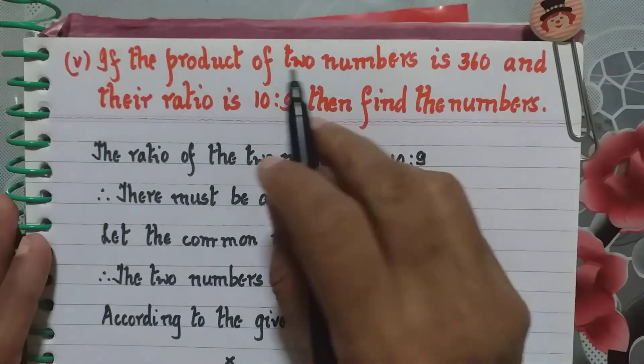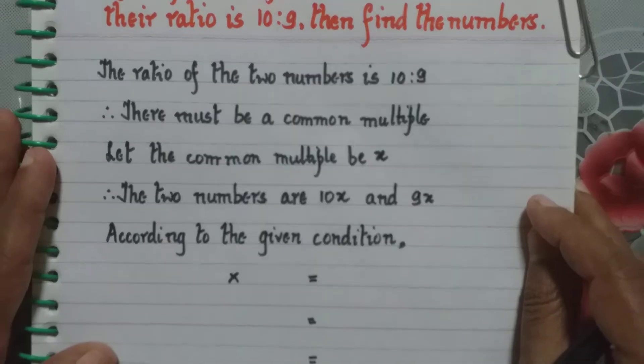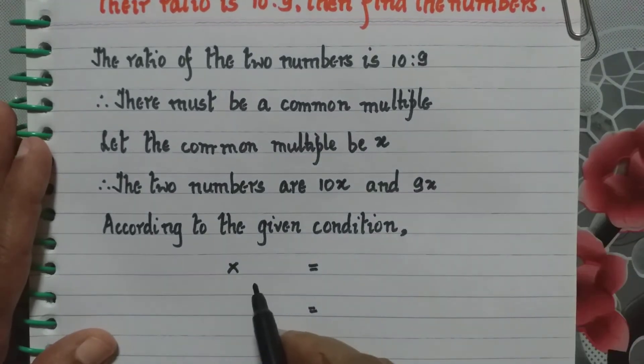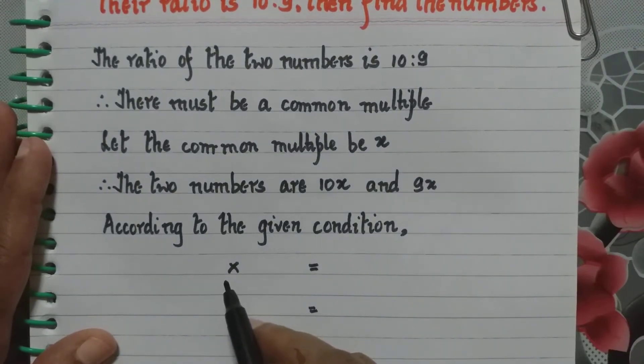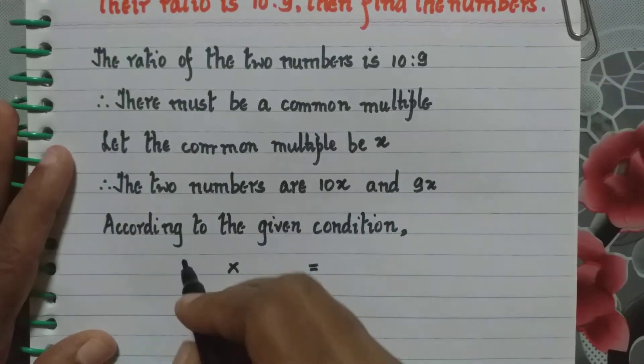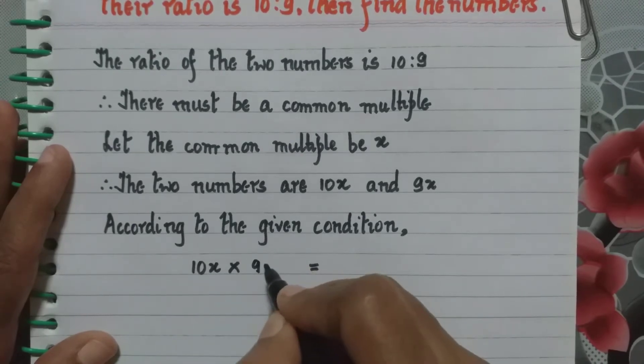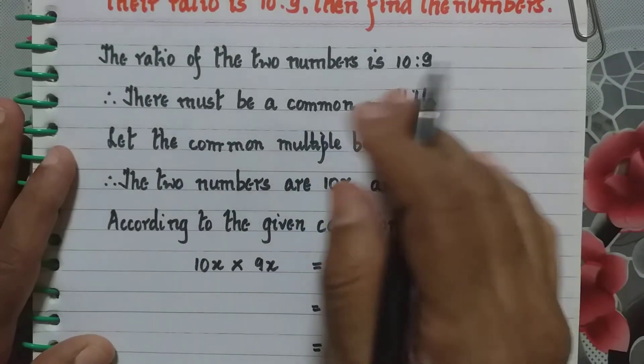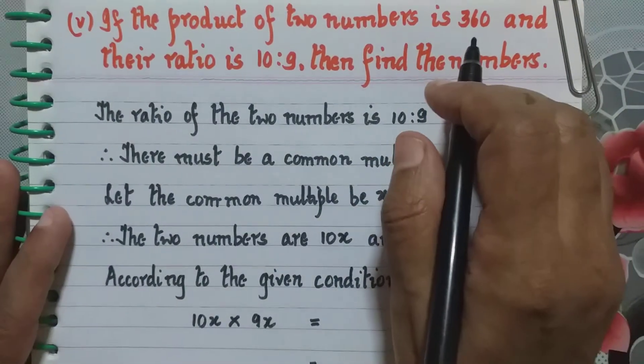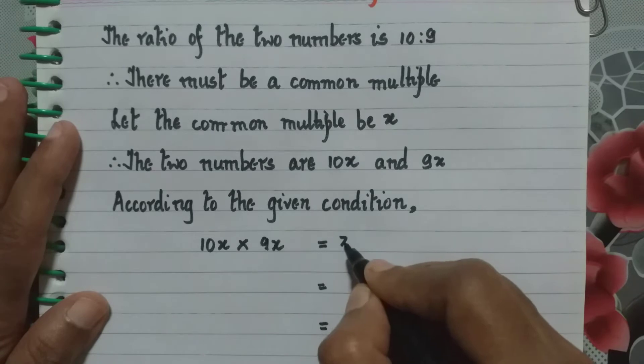Now what is the condition given here? The product of the two numbers is 360. When we say product it means there is multiplication. The two numbers are multiplying with each other. So 10x into 9x is equal to what is the product of the numbers? 360. So we write here 360.